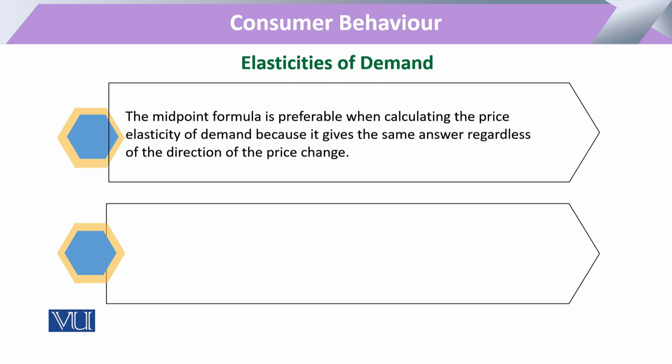When we measure elasticity, it means the consumer has changed position from one point to another. There is an original quantity demanded at a respective price, and due to the change in price, there is a new quantity level to attain. The change between these two points is the elasticity of demand.